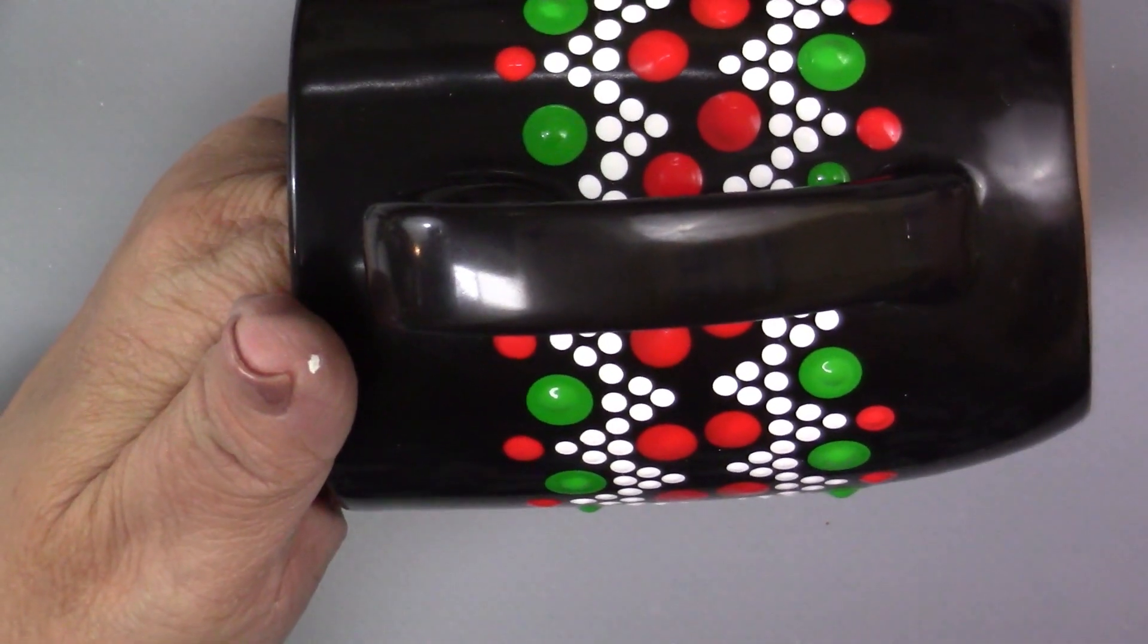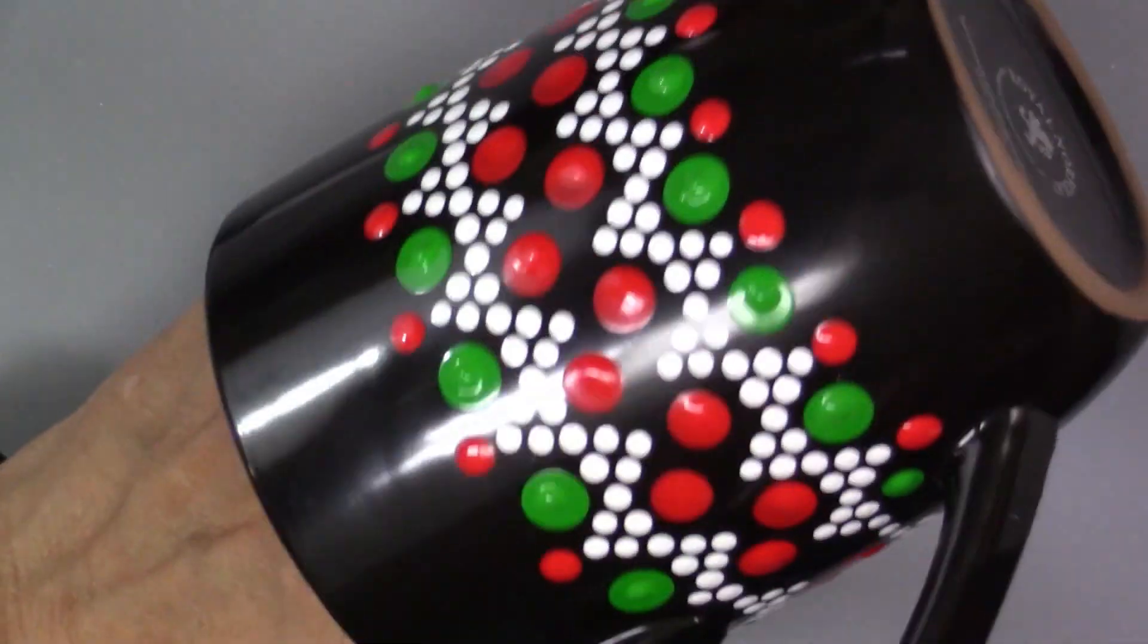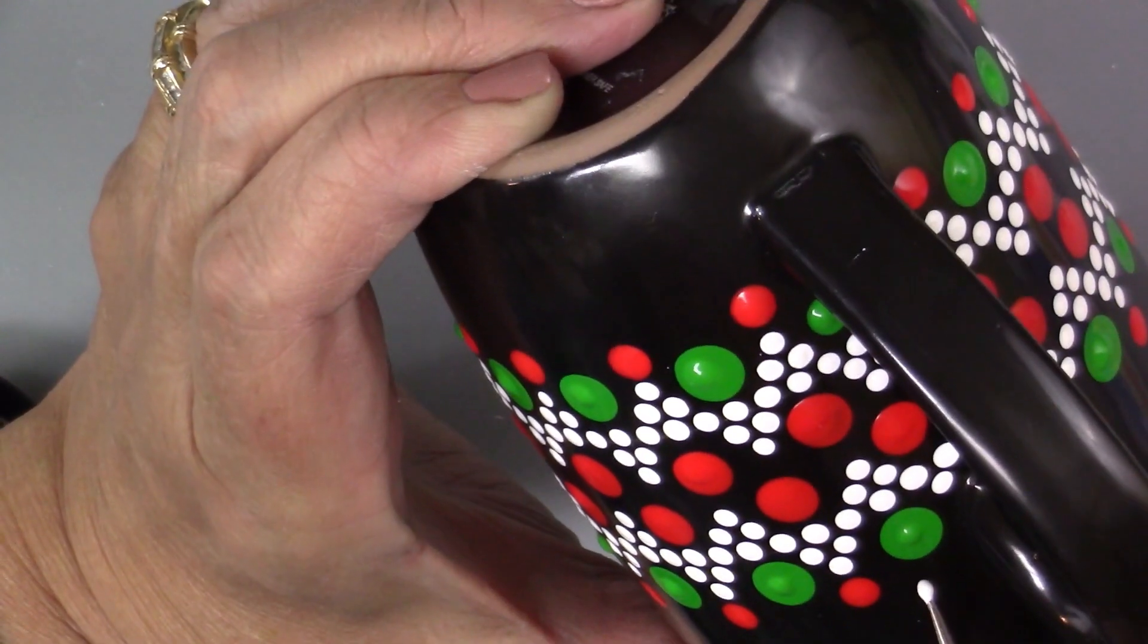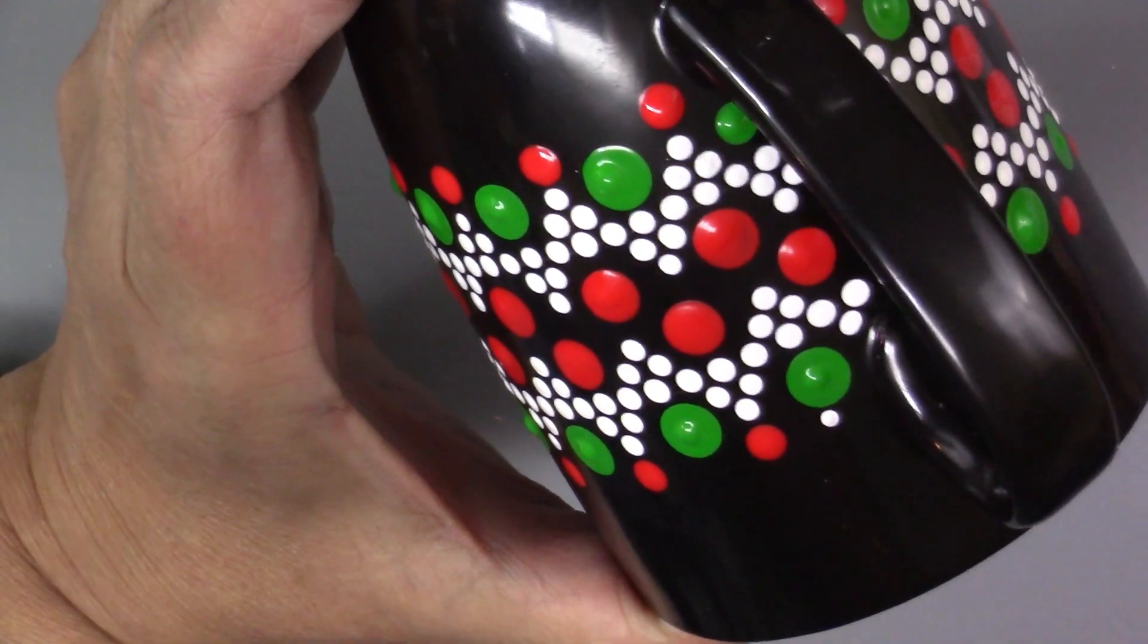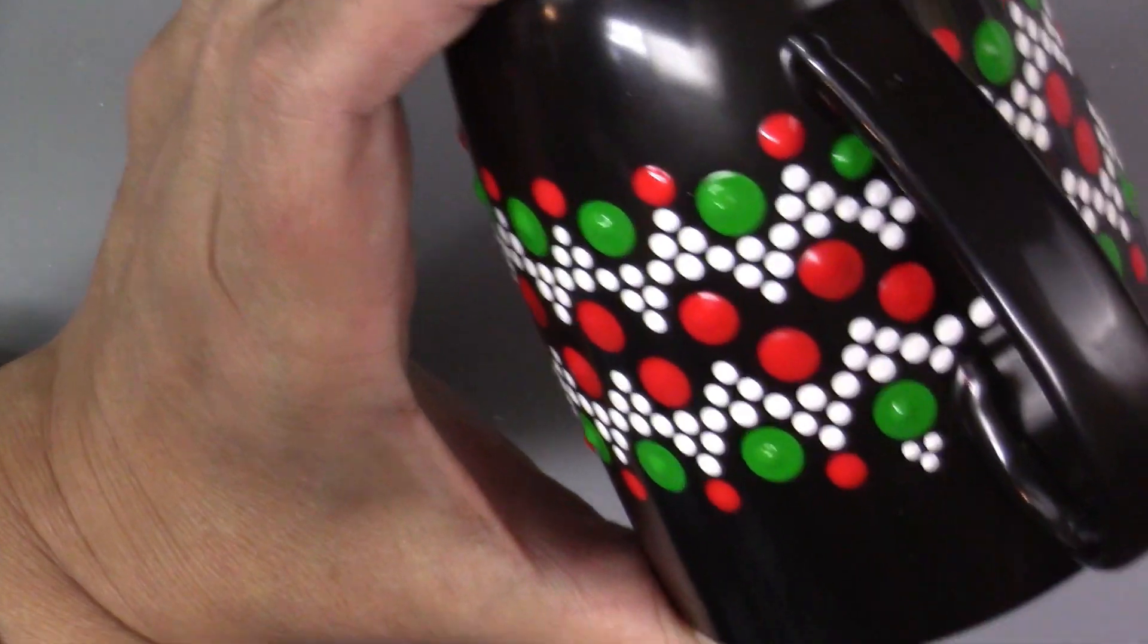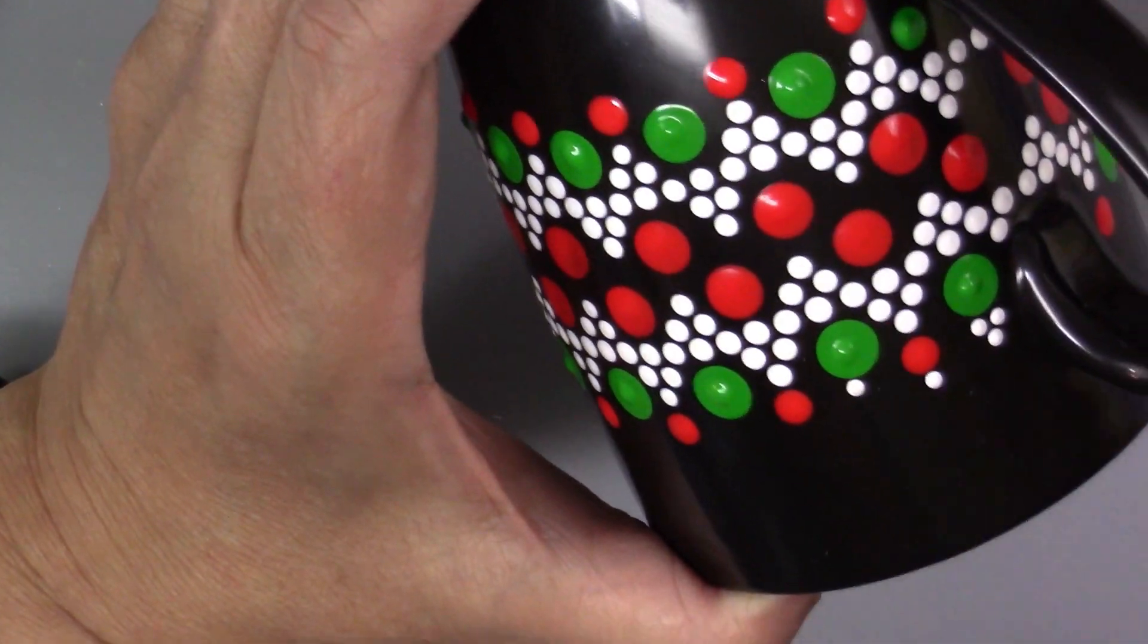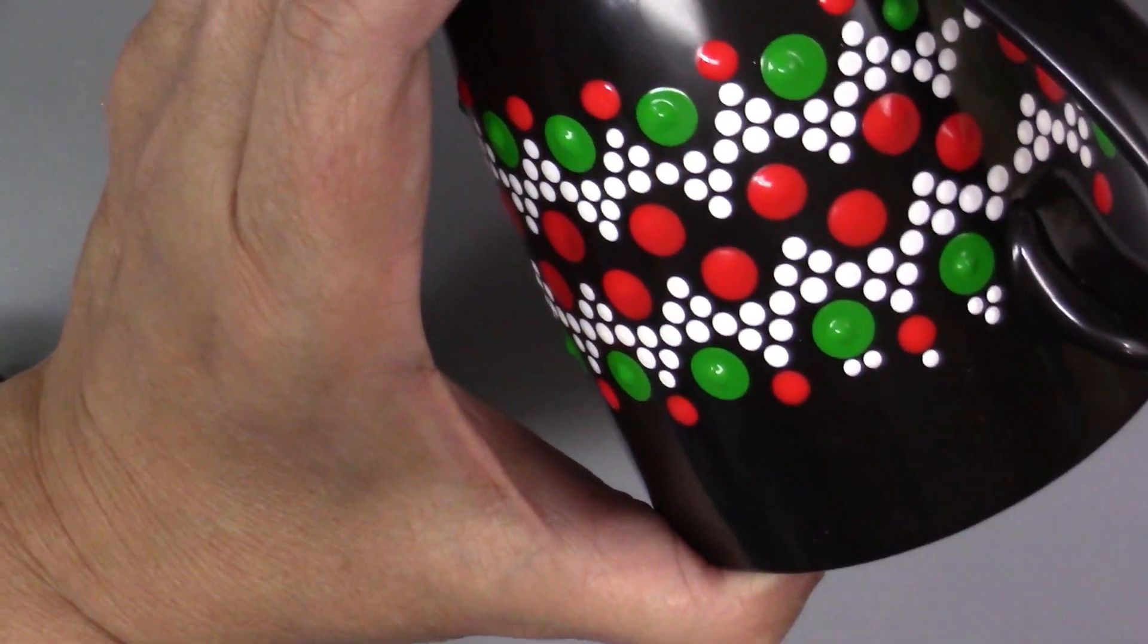And once I get all those dots down, I will go ahead and let it dry, and then I'm going to come back in with one of my smaller nail dotters, and I'm going to put a little crown of three right above each one of those green dots, and then just one dot above the red, and I'll do that all the way around on the top and the bottom.